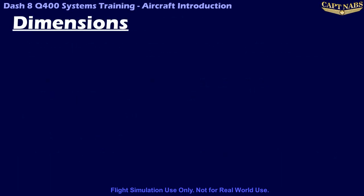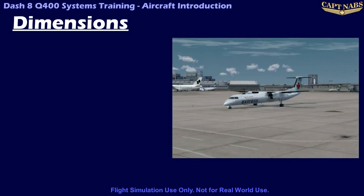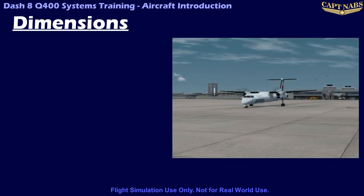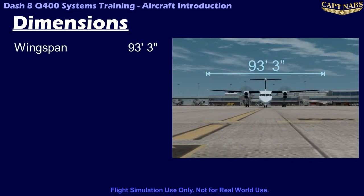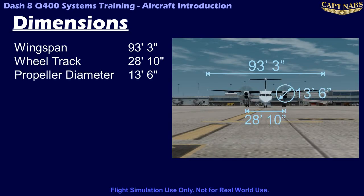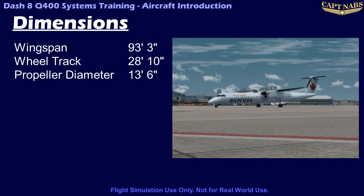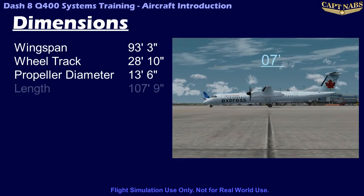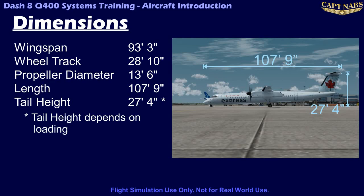Pilots should be familiar with the key dimensions of their aircraft, as these may limit areas where the aircraft can operate. The most critical dimensions on the Q400 are: wingspan 93 feet 3 inches, and wheel track 28 feet 10 inches. The propellers have a diameter of 13 feet 6 inches. The Q400 is also 107 feet 9 inches long, and has a maximum tail height of 27 feet 4 inches, though this figure can vary somewhat depending upon aircraft loading.